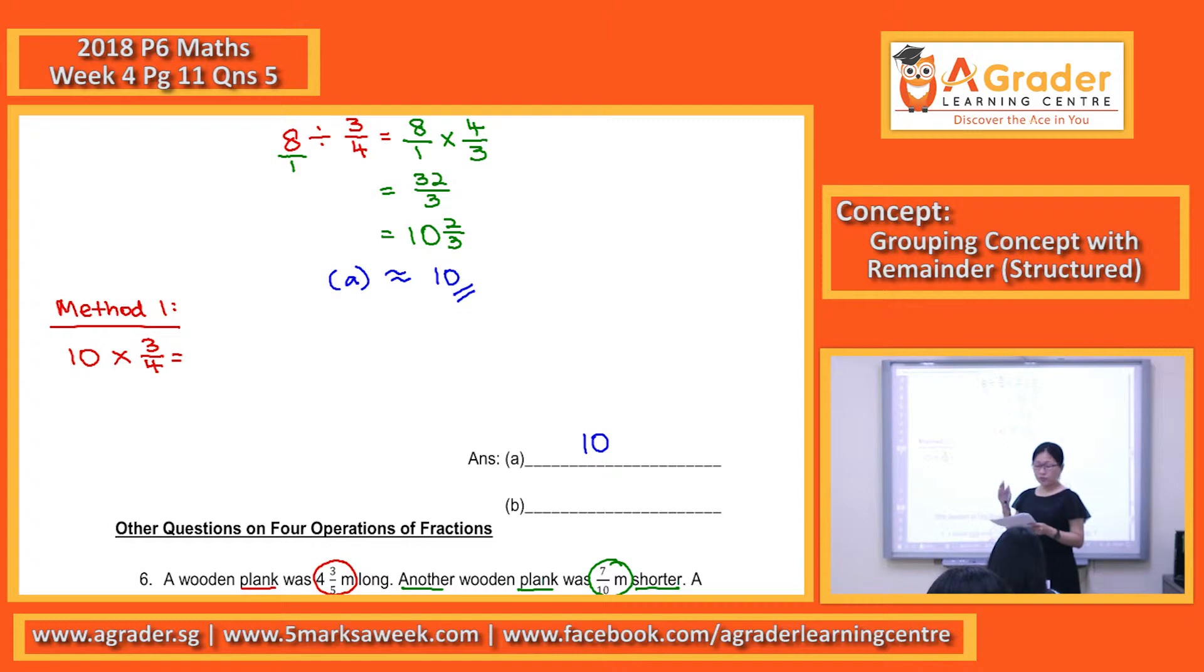So applying the multiplication directly with cancellation, you will get 15 out of 2.